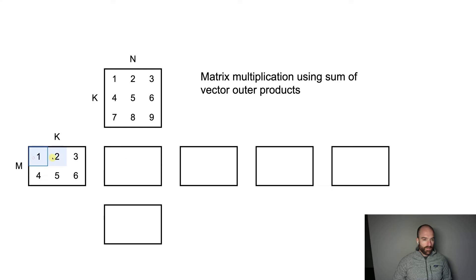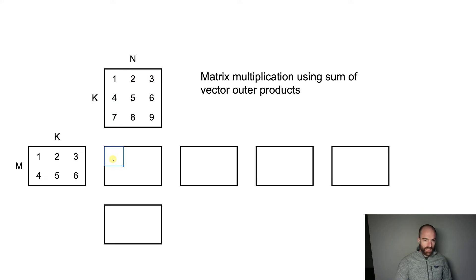The way matrix multiplication is done is that we take one row of the input, which is a vector of size K, and we do a dot product with the corresponding column of the other matrix, which is another vector of size K. This is why these two dimensions have to match — because you can't do a dot product if they're not the same size.